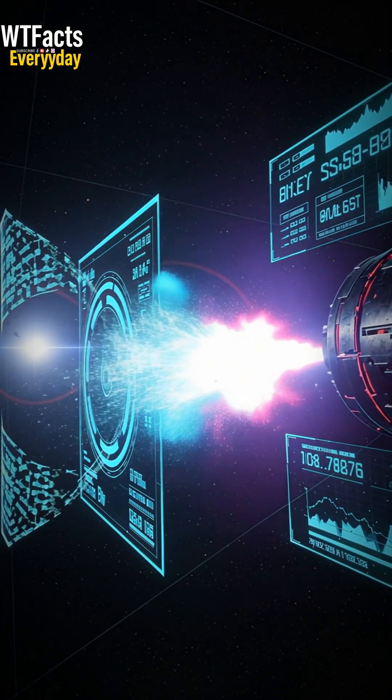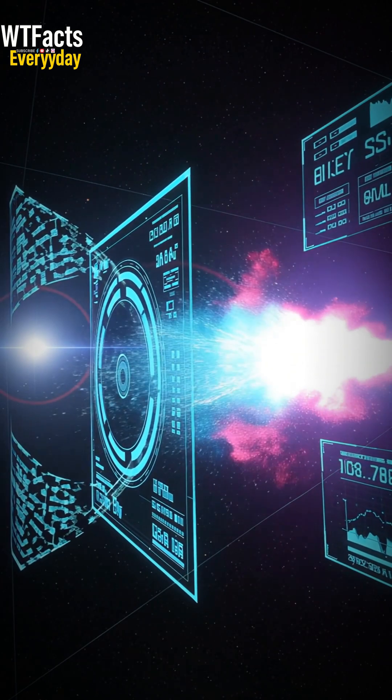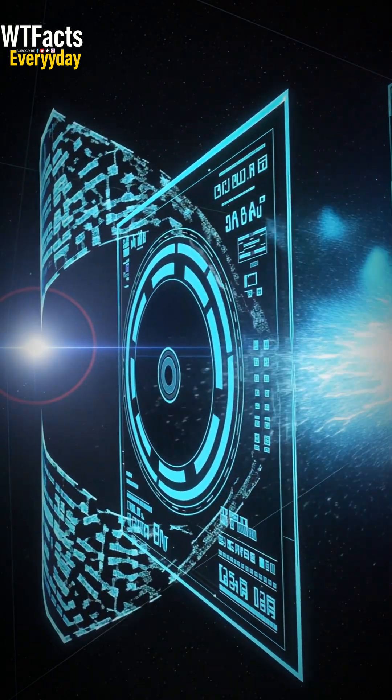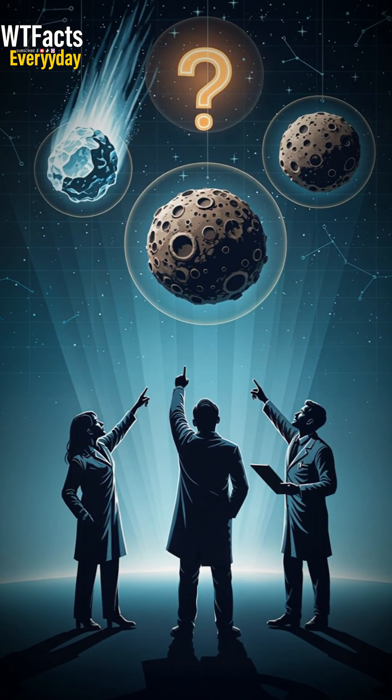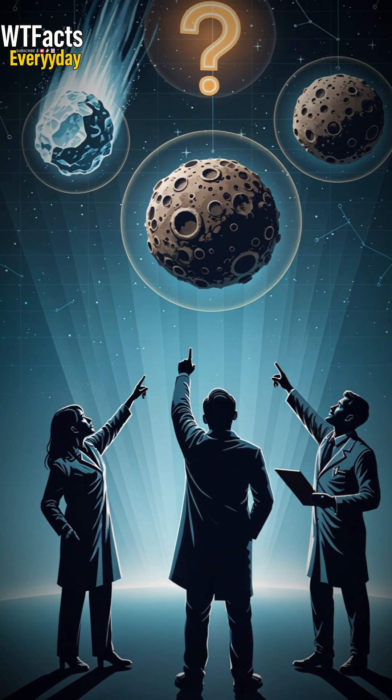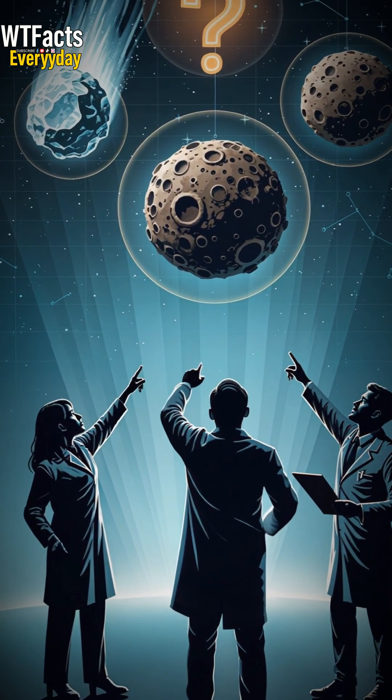But here's the twist. Its brightness doesn't match its size, and its tail doesn't behave like a normal comet at all. Some scientists say it's icy, others think it's rocky. A few even argue it might be something entirely new, something we've never classified.